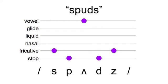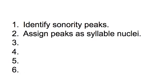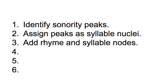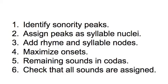So this is how we determine the syllable structure of a word. First, we identify the sonority peaks. We label these as the syllable nuclei. Then we add the rhyme and syllable nodes above the syllable nucleus for vertical completion. Once we've piled up the labeling above the nucleus, then we maximize onsets. We do that for every syllable in the word. Once we've done that for every syllable in the word, then any sounds that are left over can go into the coda or codas. And then it's worth just checking at the end that every sound in your transcription has been assigned to a role.